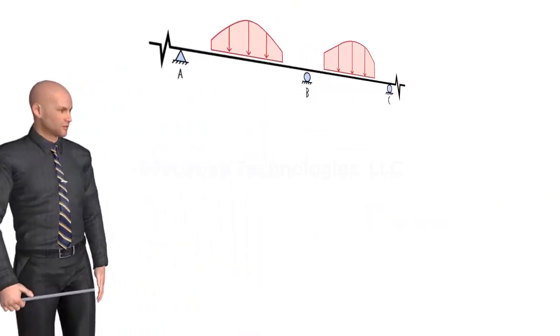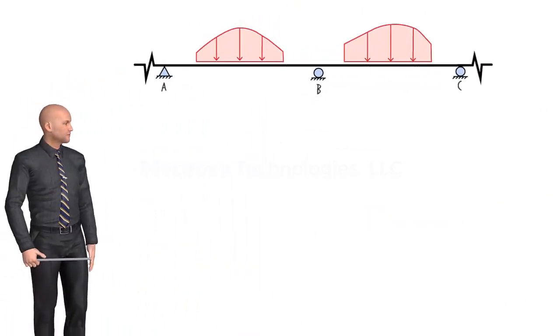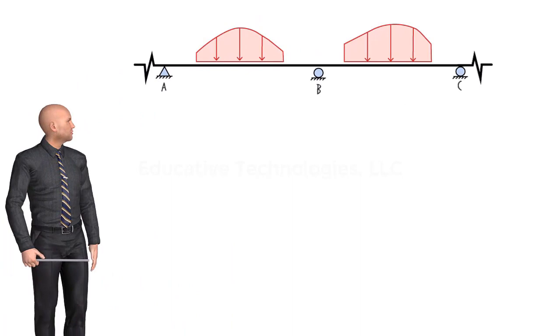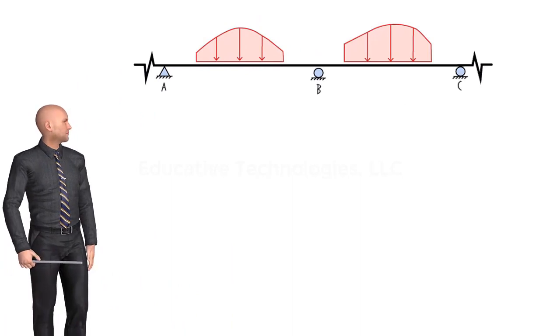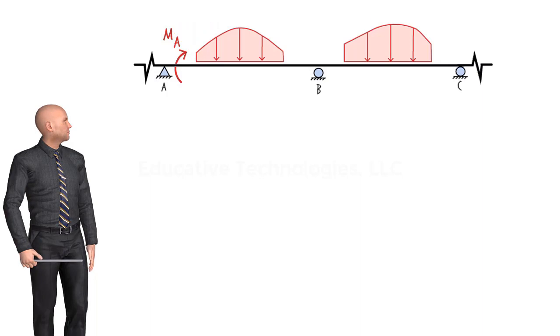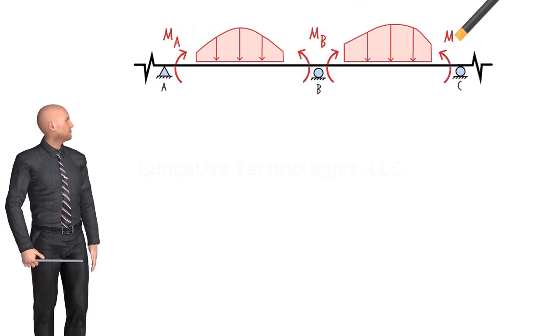Note that the member end moments and rotations are assumed to be positive when acting in the counterclockwise direction. Also, the member end relative vertical displacement is considered positive when it is induced by a counterclockwise member rotation. For the three-moment equation, we need to label the internal moments at A, B, and C as MA, MB, and MC, respectively.